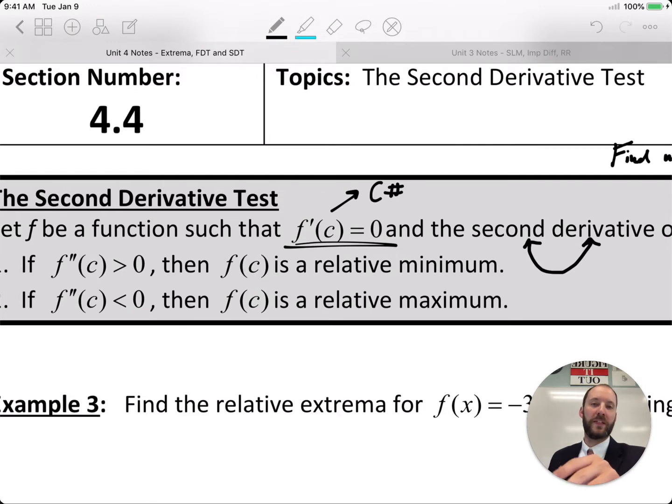If f double prime of c is less than 0, then we have a maximum because if you have concave down and a critical point where the derivative equals 0, you have a maximum at that point.